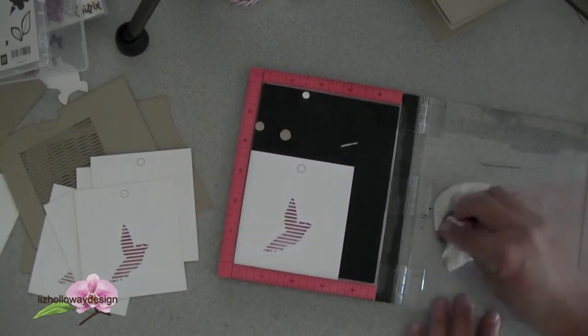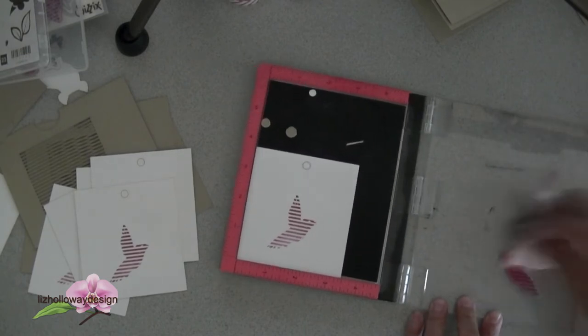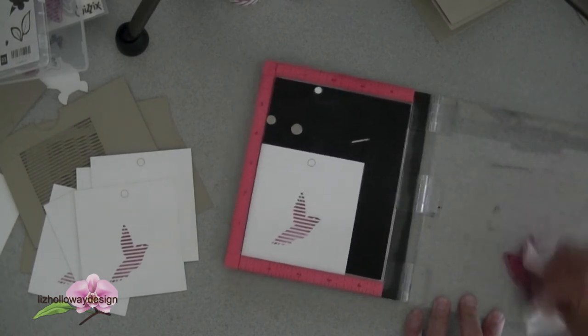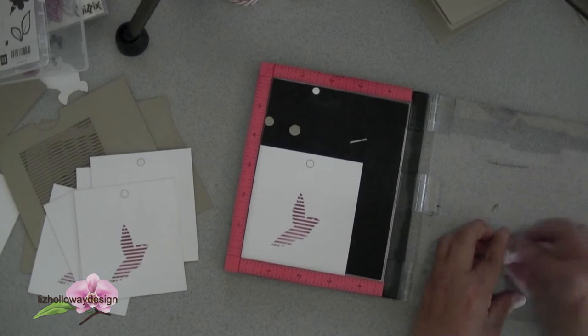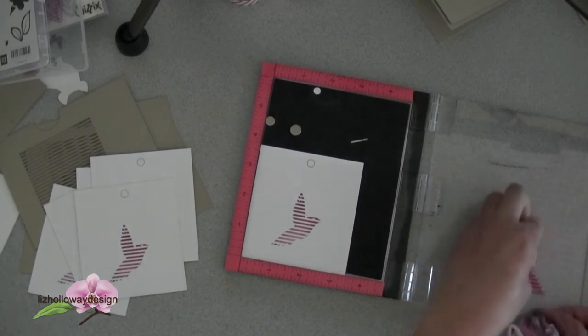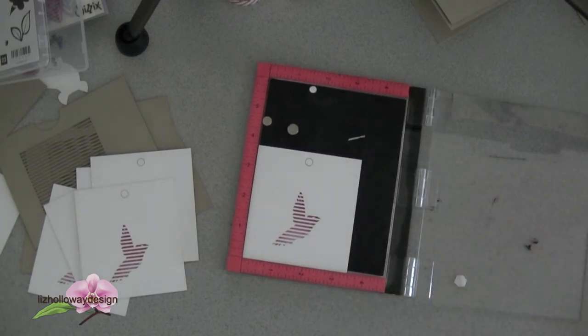Then what you're going to do is clean up all the ink off the MISTI. If you have two mini MISTIs, it actually works better because if you want to make additional more, you don't have to worry about positioning it and you can make more.